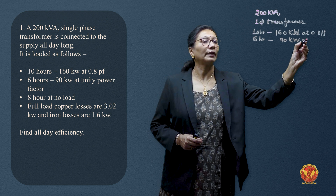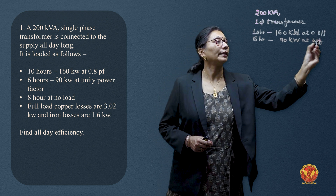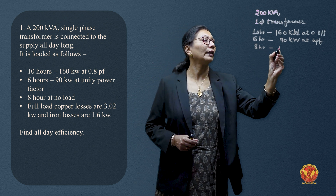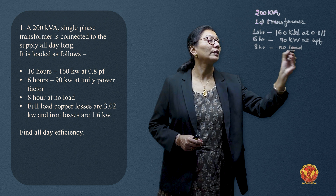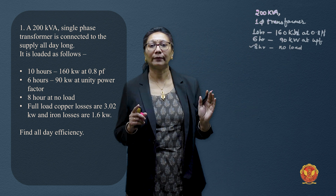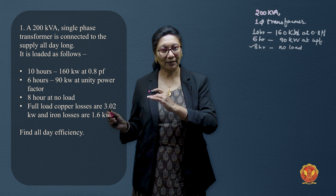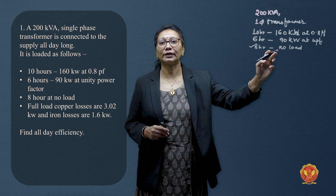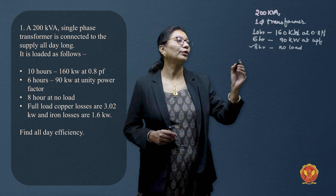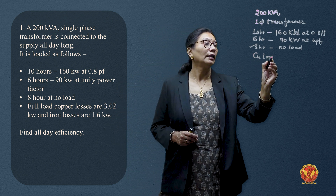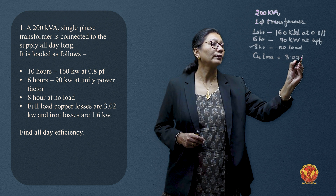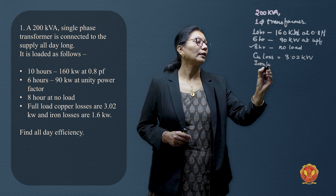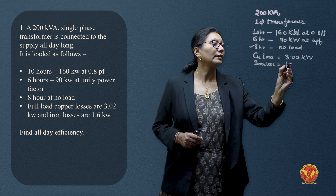For the next 6 hours, power factor is unity (1). For the next 8 hours, there is no load. However, we must account for this period too — even when there is no load on the secondary, primary supply is continuous, excitation is present, and flux is set, so iron losses must be calculated for these times as well. Full-load copper losses are 3.02 kW and iron losses are 1.6 kW.